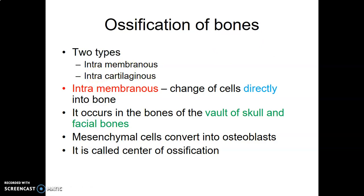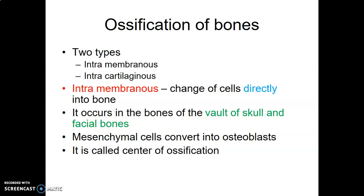In intramembranous ossification, mesenchymal cells transform directly into bone cells and begin laying down bone. This occurs mainly in the flat bones of the skull and face, as well as the lateral third of the clavicle. In this process, mesenchymal cells converge and differentiate into osteoblasts, which start laying down osteoid to form bone.